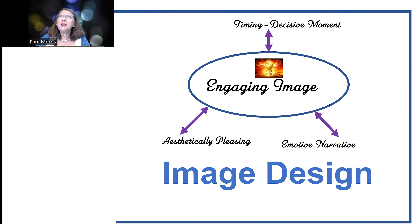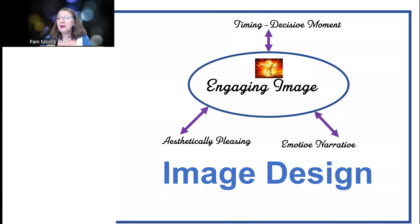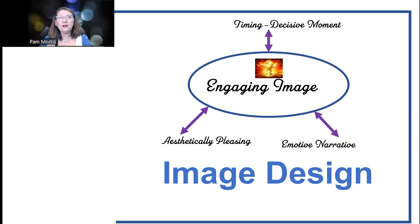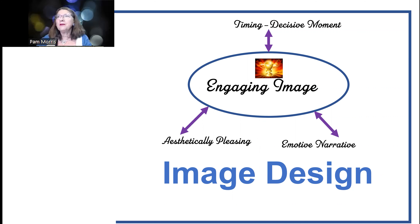I'm going to do a very quick review of what we've covered so far, because we're going to be building on those things in today's lesson. We started off talking about what makes an engaging image — timing is important in photography, but what makes something aesthetically pleasing with an emotive narrative is what tugs at our heartstrings and makes us connect intellectually to an image. Today we'll look at elements that not only make images aesthetically pleasing but trigger an emotive reaction we're often unaware of.